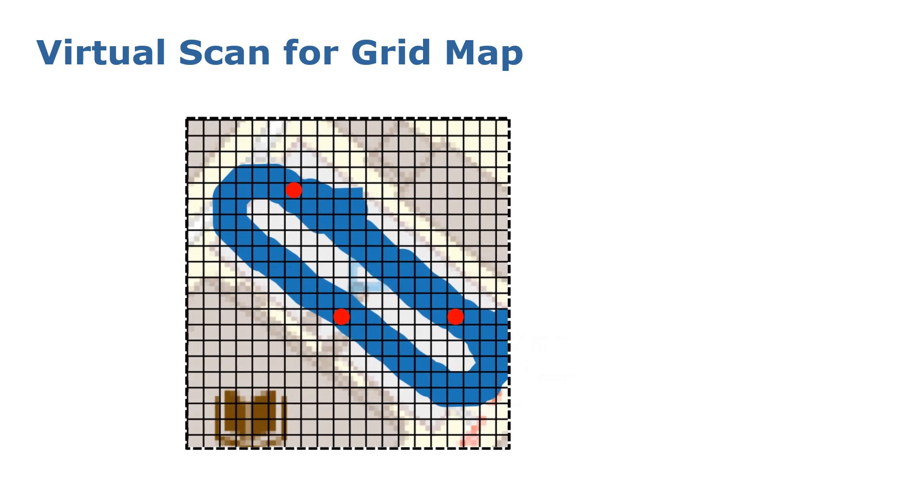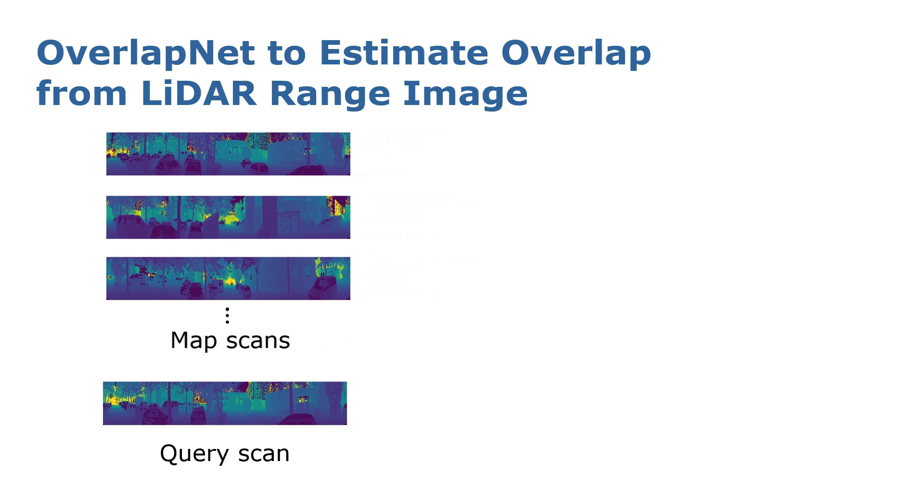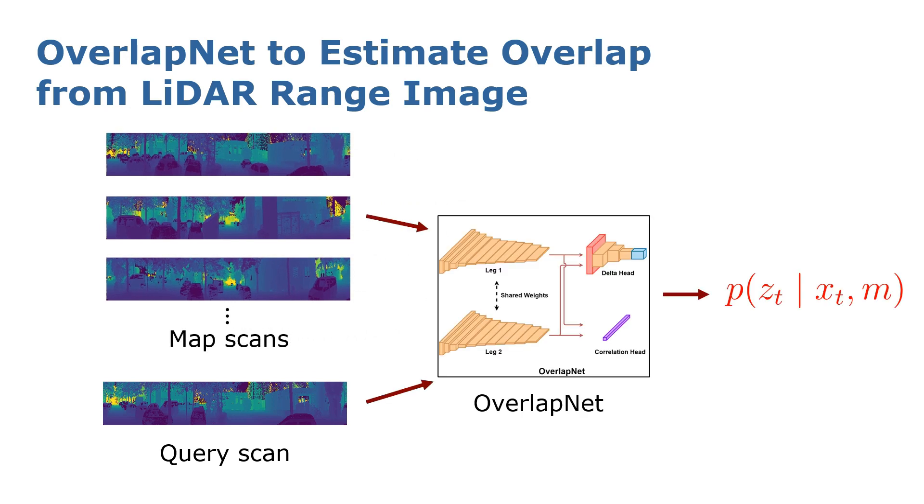For each particle, we use the nearest virtual scan to generate a map frame. And then we will compare the query scan to all those map scans assigned to the particles using OverlapNet and update the weights of particles using the proposed observation model.